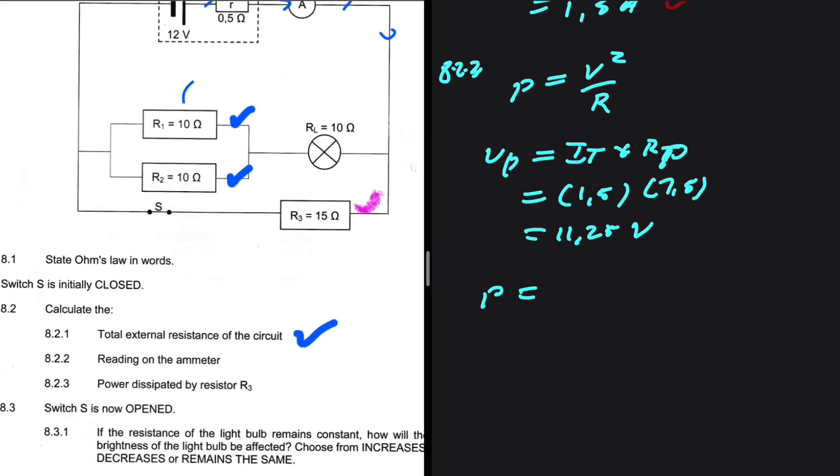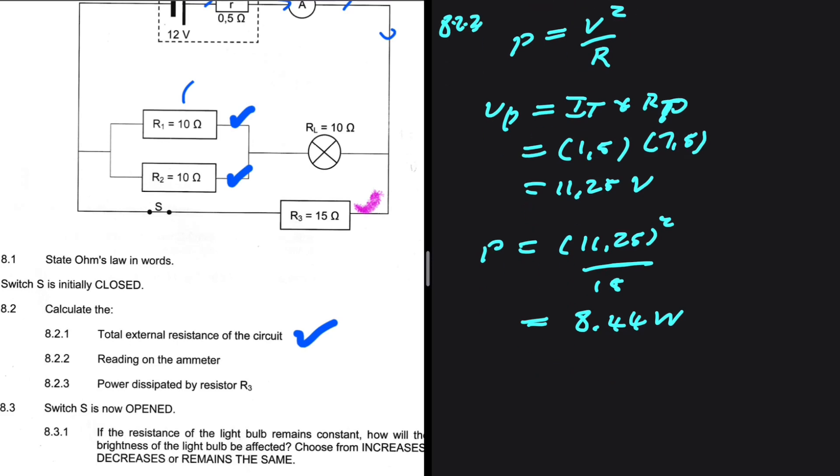We can go ahead and calculate the power. The power is going to be 11.25 squared divided by the resistance, which is 15. Let me go ahead and put that in my calculator. So 11.25 squared divided by 15 is 8.44 watts. So there we go. We have our power.